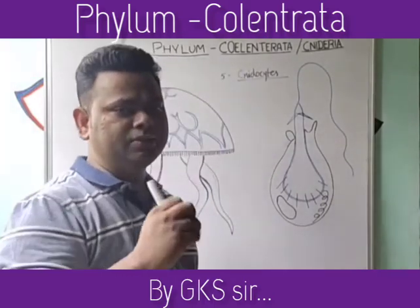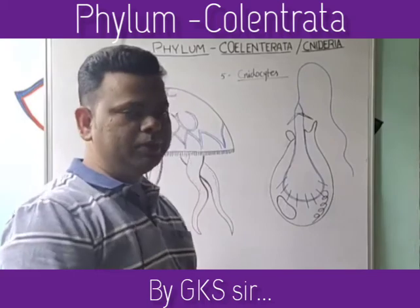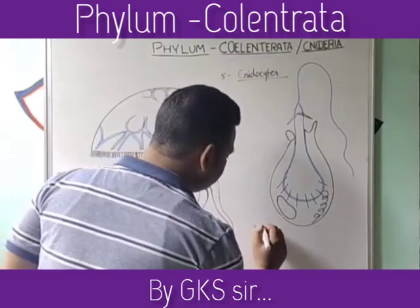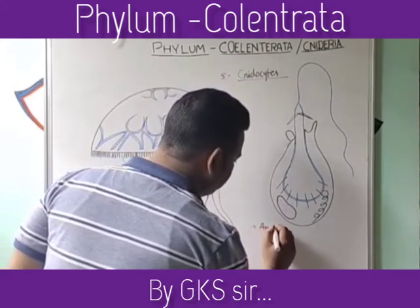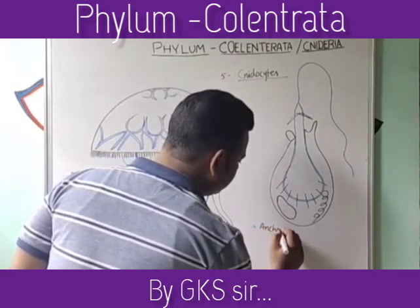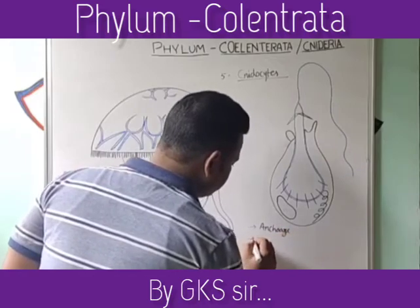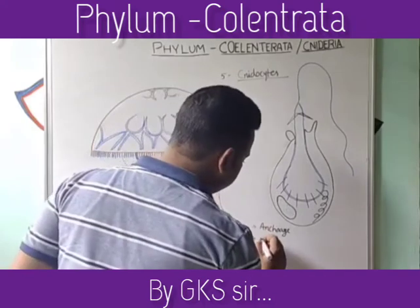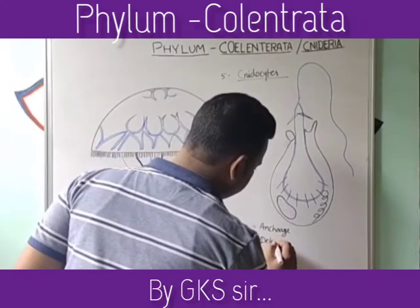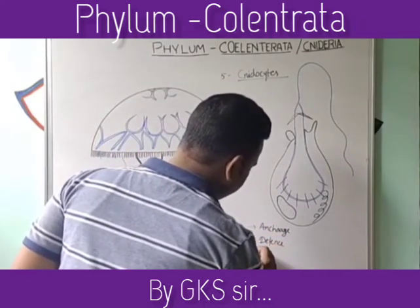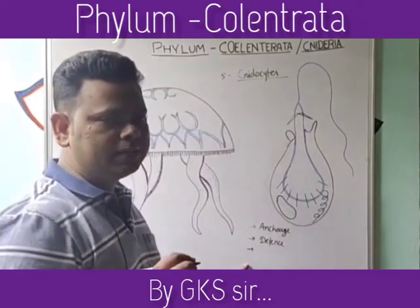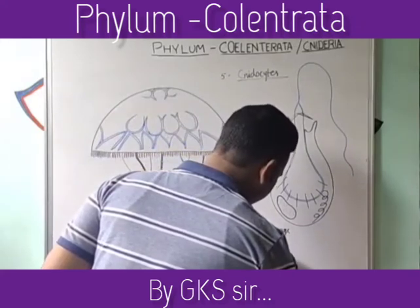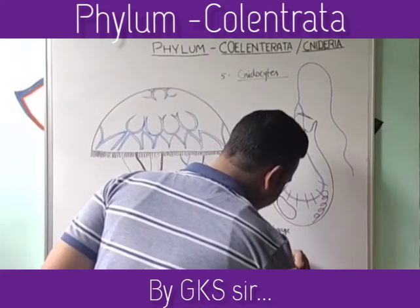This mechanism helps in three processes. First, anchorage. The next important function is defense. And the third important purpose of the nematocyst cell is prey capturing.